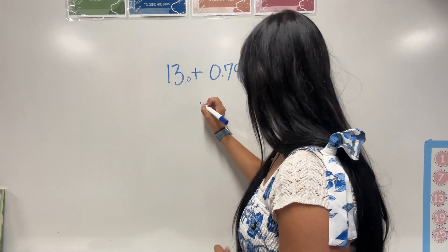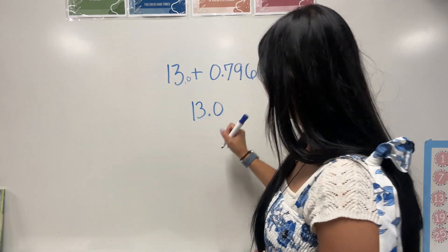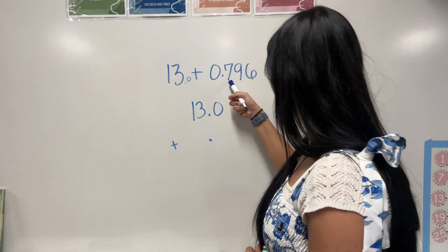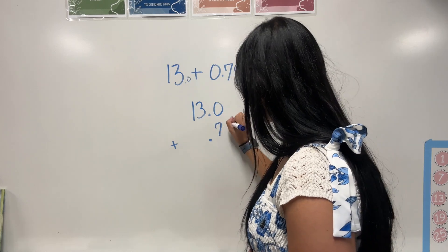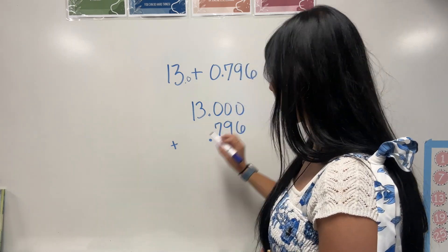So vertical is going to look like 13.0 plus this decimal lines up here, 7, 9, 6. So let's go ahead and add those zeros here so that way it is even.